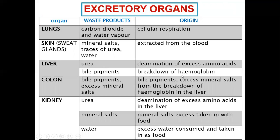Bile pigment is a result of the breakdown of hemoglobin. Hemoglobin is a very important compound that makes up red blood cells — it's what makes our blood look red. Bile pigment and excess mineral salts come from the breakdown of hemoglobin in the liver, and bile pigment can be excreted through the colon or the liver.